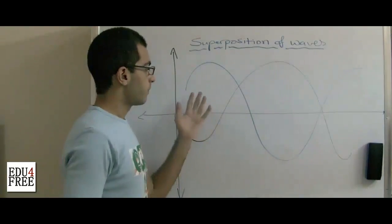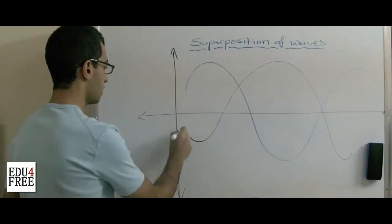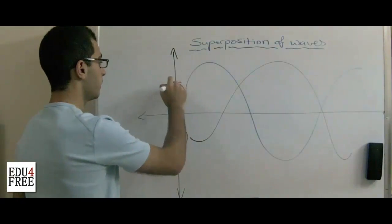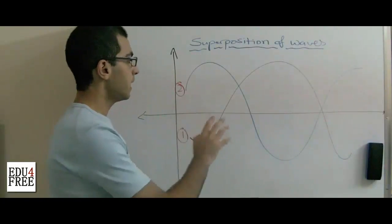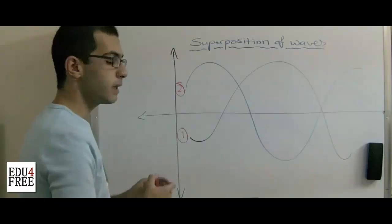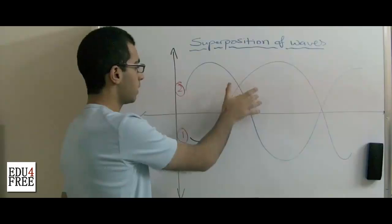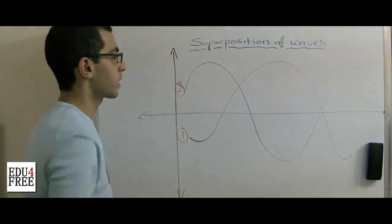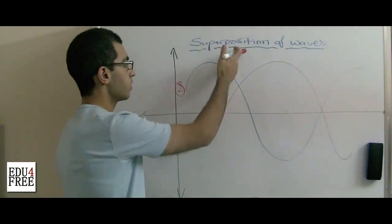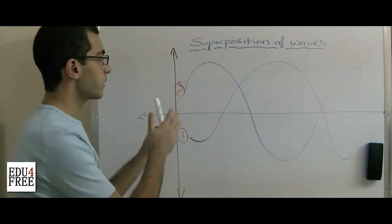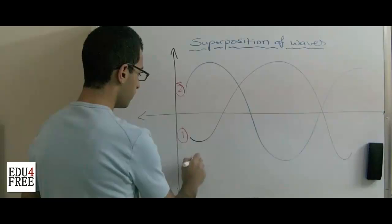When two waves interfere with each other, like these ones here — this is wave number one and this is wave number two — they interfere at certain points and a resultant wave forms. The intensity of this wave equals the sum of the intensities of both waves. This interference leads to the superposition of waves, which leads to the formation of beats.